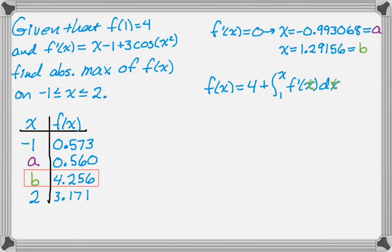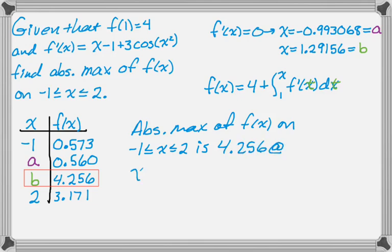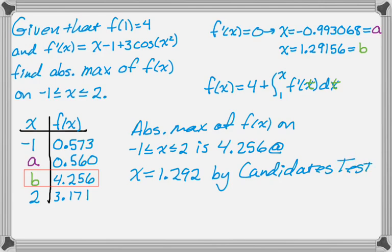So I get that. And the question was about the absolute maximum. So the absolute maximum from the table is clearly 4.256. That's huge compared to other things. And so we want to write up our answer. So the absolute maximum of f of x on the interval from negative 1 to 2 is 4.256. And it occurs at x equals 1.292 by the candidate's test. Notice that I've rounded everything to three decimal places. That's essential if you don't want to lose points. Anyway, I hope you found this helpful, and good luck.